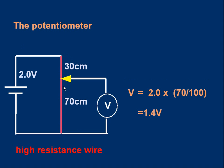You could say that the resistance of the top section is 30 units. It doesn't have to be ohms, it's 30 units. And the resistance of the bottom section is 70 units. We can use the potential divider formula to find the voltmeter reading.